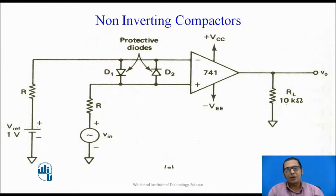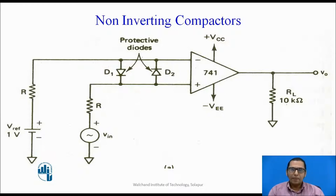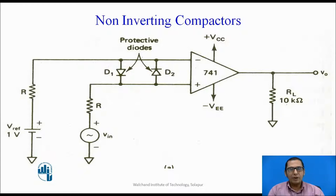This is the first circuit — the non-inverting comparator in open-loop, because there is no feedback provided for the op-amp. It contains a popular op-amp 741, with two power supply rails: plus Vcc and minus VEE. There are two inputs: an inverting input and a non-inverting input. Connected to the inverting input is a positive reference voltage — for this example, an arbitrary value of 1 volt. Connected to the non-inverting input is a sinusoidal signal, VIN. This is called a non-inverting comparator because the input signal is connected to the non-inverting terminal and the reference voltage is connected to the inverting terminal.